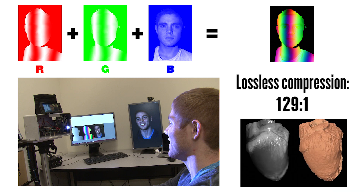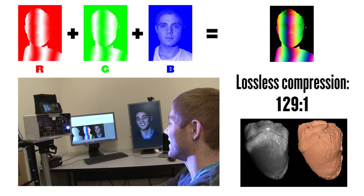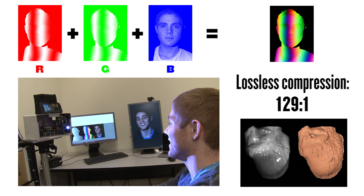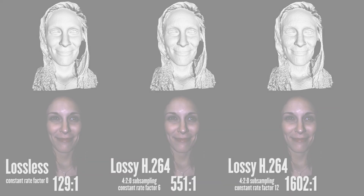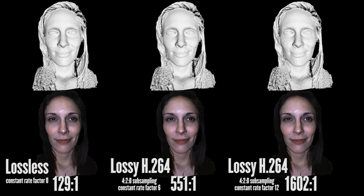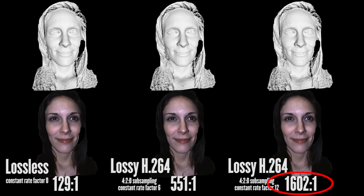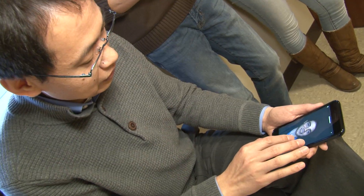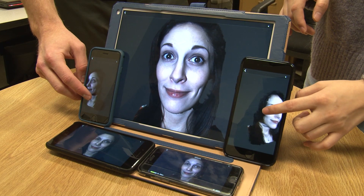If you're dealing with something like medical imagery, where accuracy is important, you would use lossless compression, shrinking the data by a 129 to 1 ratio. However, if you're just chatting with someone, then H.264 video encoding can compress the data even further — up to 1,600 times smaller — small enough to be streamed over existing consumer data networks at up to 30 frames per second.